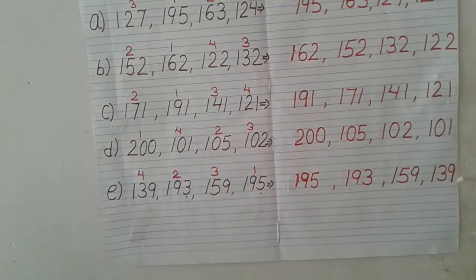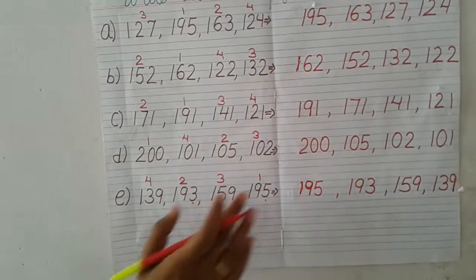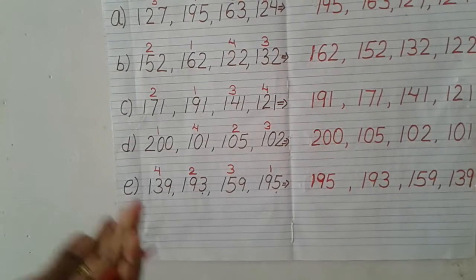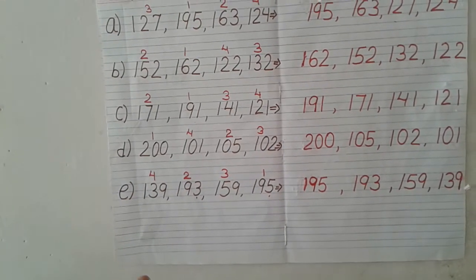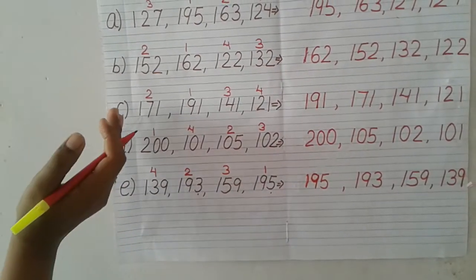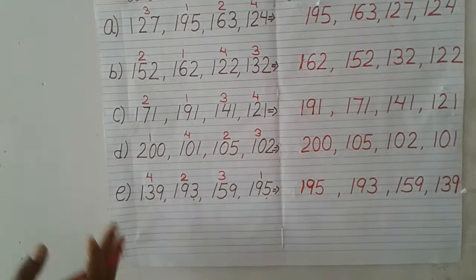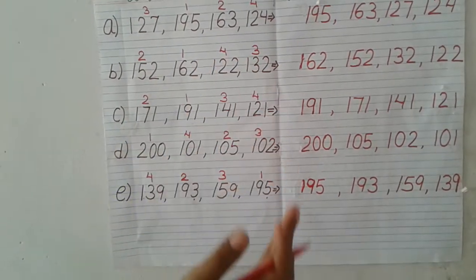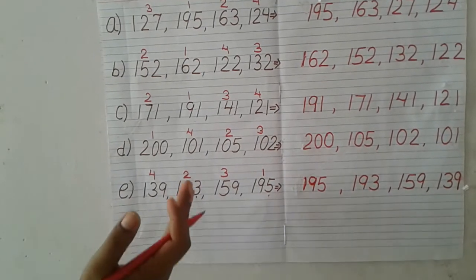I hope children the decreasing order concept is clear. First arrange them digit by digit — compare the hundreds place, then the tens place, and then the ones place. Thank you.